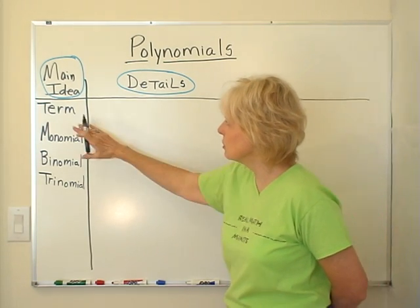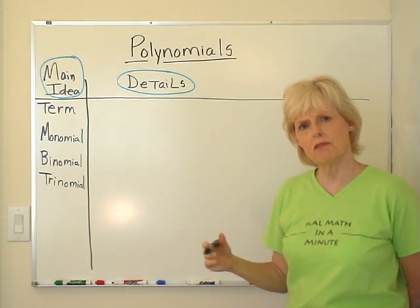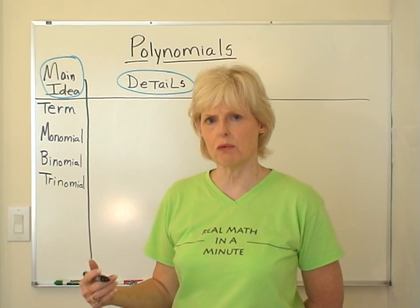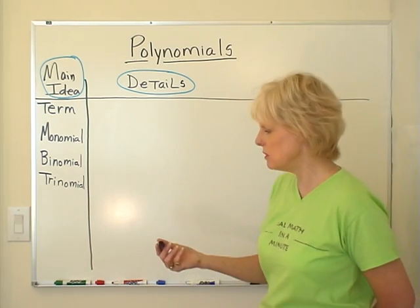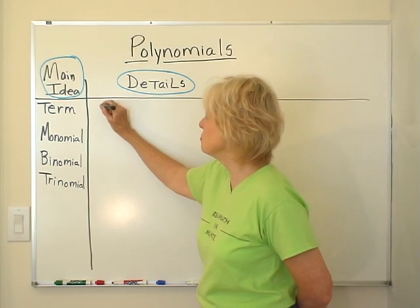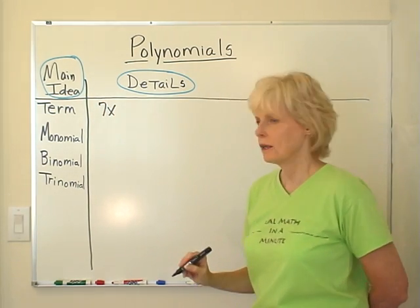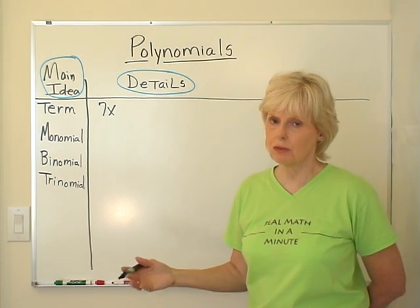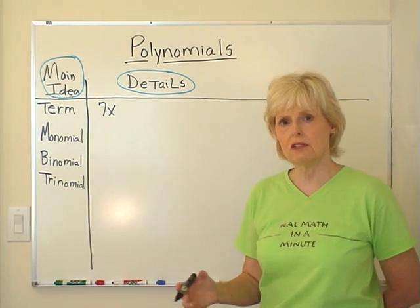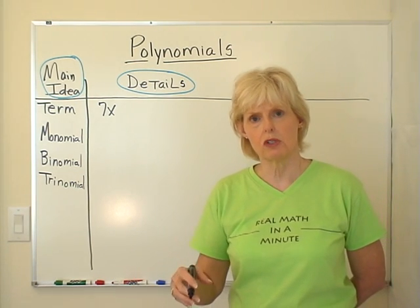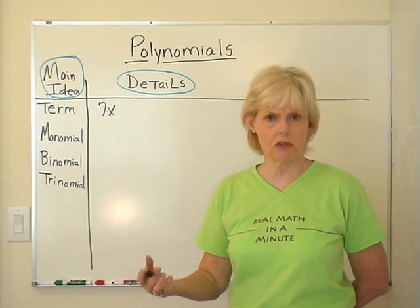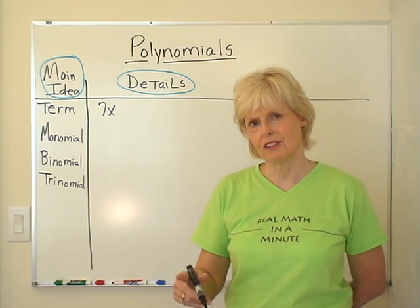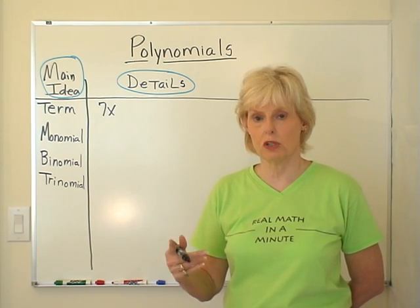The first thing that we're going to look at is what I mean by the word term. I've used that loosely in other segments but we haven't really talked about what a term is. So a term is, for an example, 7x. There's nothing being added or subtracted in a term. And that's really all that you need to say about a term. It is any group of numbers or variables or exponents or all of those, but nothing's added or subtracted and therefore it is considered to be one term.